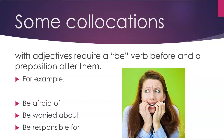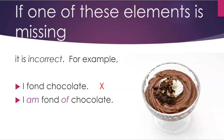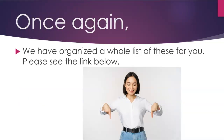Some collocations with adjectives require a be-verb before them and a preposition after them. For example: be afraid of, be worried about, be responsible for. If one of these elements is missing it is incorrect. For example, 'I fond chocolate' is wrong — we should say 'I am fond of chocolate.' Once again, we have organized a whole list of these for you — please see the link in the description below.